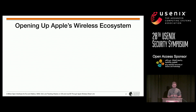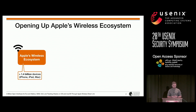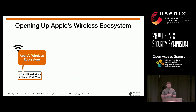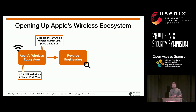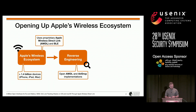We started this project to open up Apple's wireless ecosystem, which consists of more than 1.4 billion devices, including iPhone and Mac. Most of these wireless services, such as AirDrop, Auto Unlock, and Handoff, use a proprietary Wi-Fi based link layer called Apple Wireless Direct Link in combination with Bluetooth LE. In the first step, we reverse engineered two of the involved protocols — AWDL and AirDrop — re-implemented them, and made the code available on GitHub.